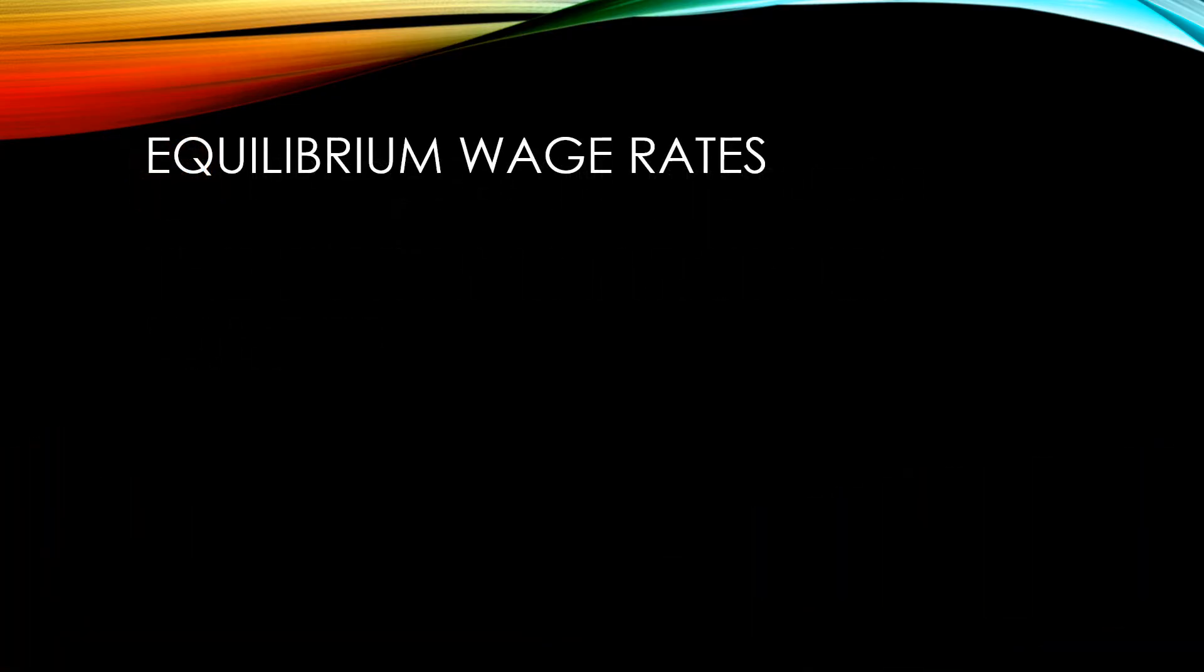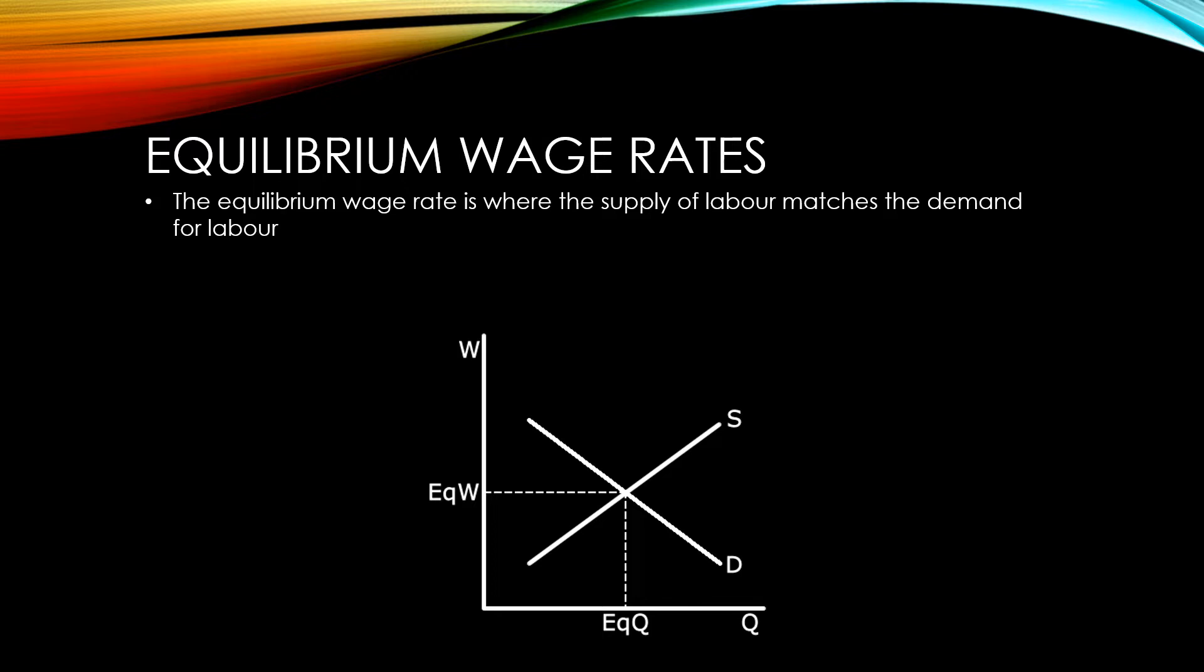Like with prices, wage rates will always trend towards equilibrium. The equilibrium wage rate is where the supply of labour by households, that is the number of people willing to work for that specific wage, exactly matches the demand from firms for labour at that particular wage.